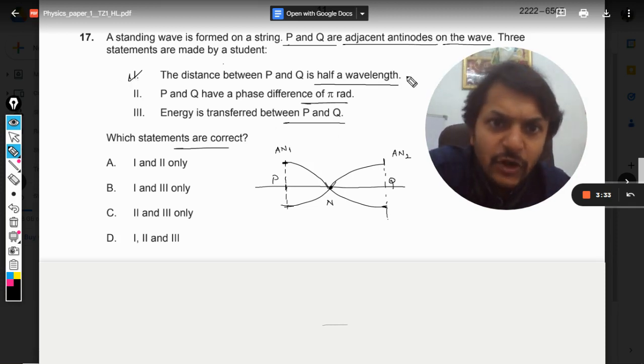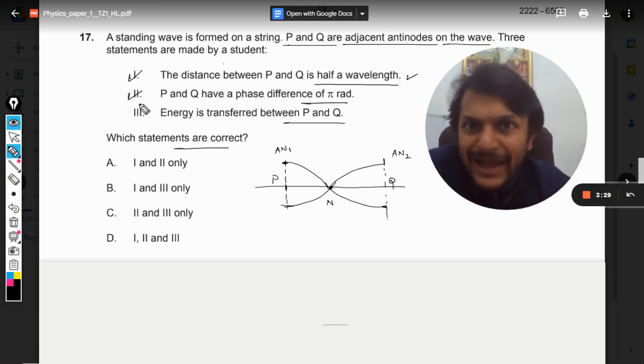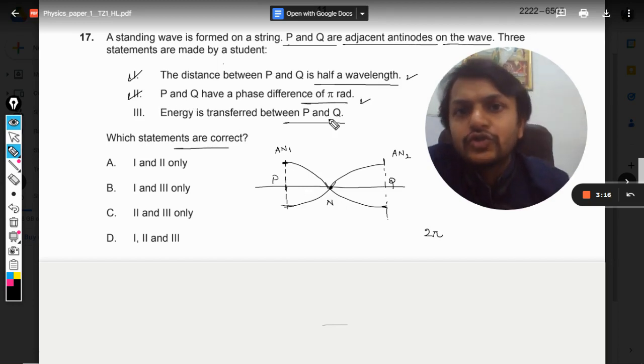Now P and Q have a phase difference of π radians. So we know that if the complete wavelength is there, the phase difference becomes 2π. And when you divide it by 2, because only half of the wavelength is spent, so definitely the phase difference is also coming out to be π. There is no doubt about it.